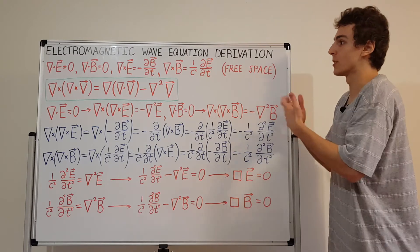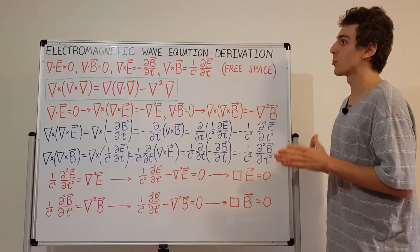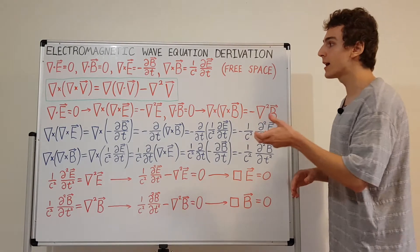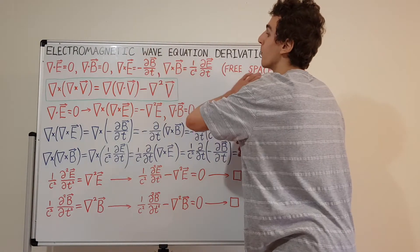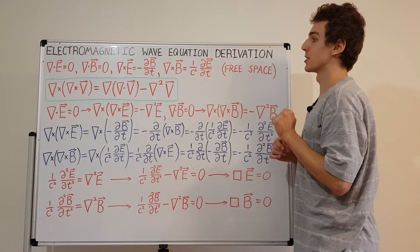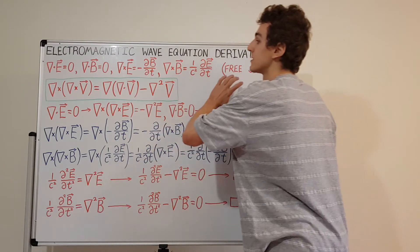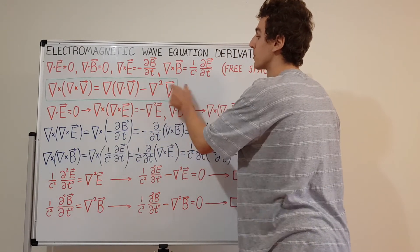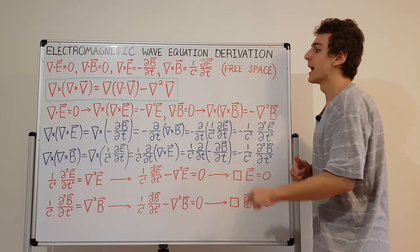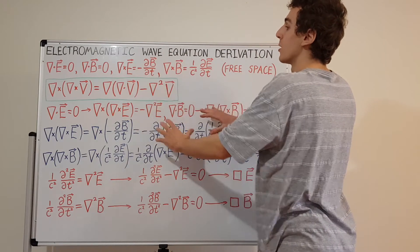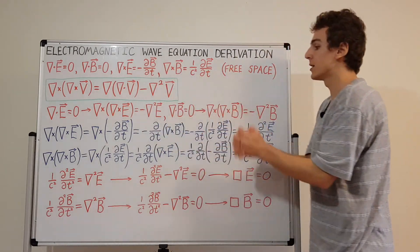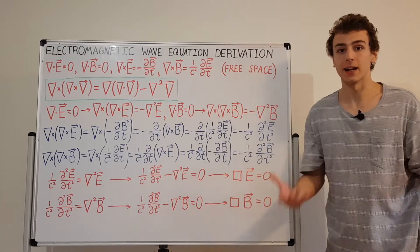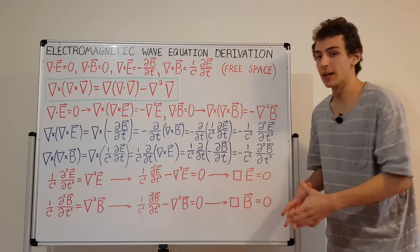To summarize: we took Maxwell's equations in a vacuum where there's no charge, modified them to fit the free-space condition, used the vector identity that the curl of the curl of any vector equals the gradient of the divergence minus the Laplacian, applied it with Maxwell's conditions, combined the equations, and derived the wave equation for both the electric and the magnetic field. These wave equations predict electromagnetic waves.